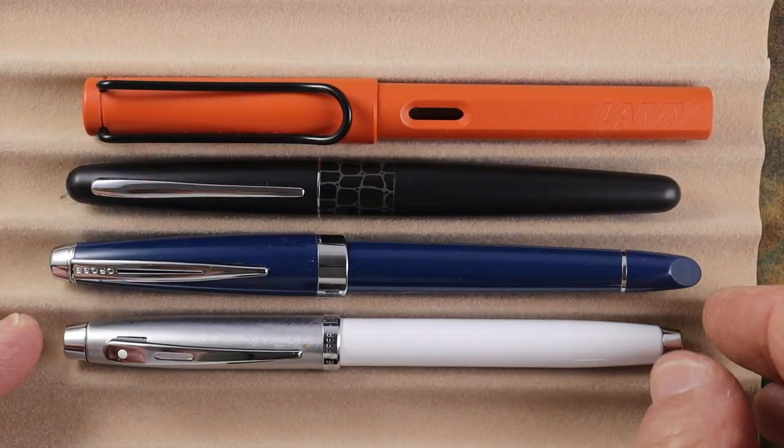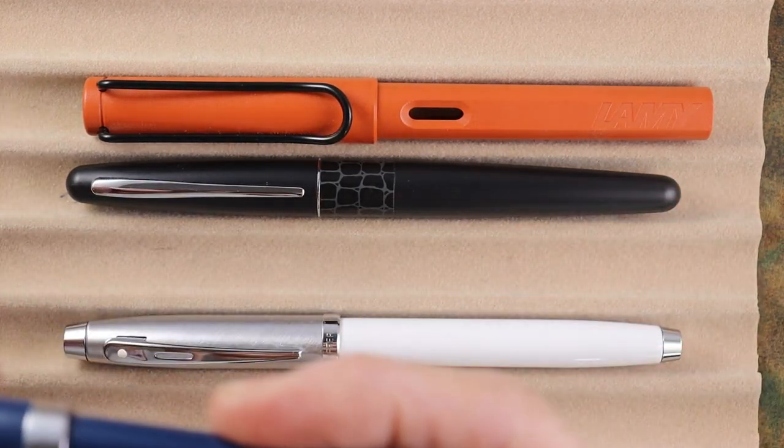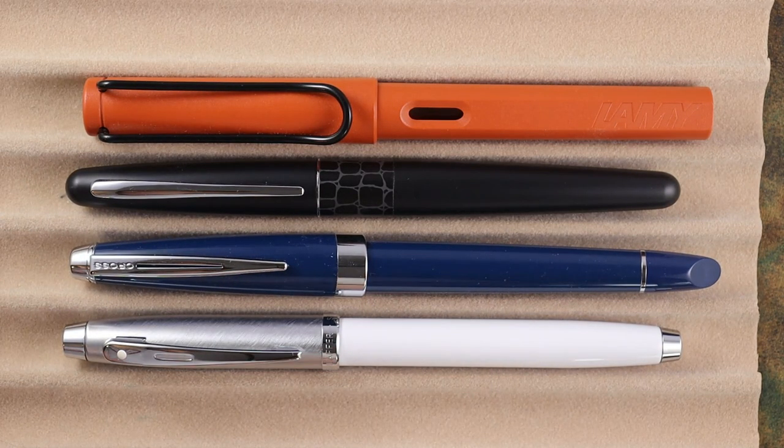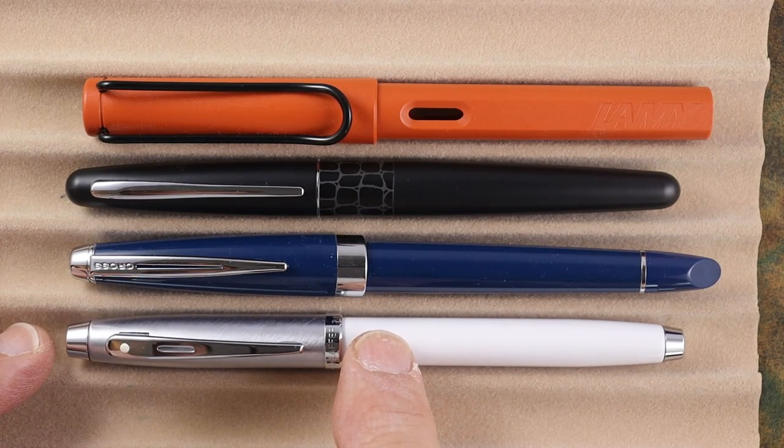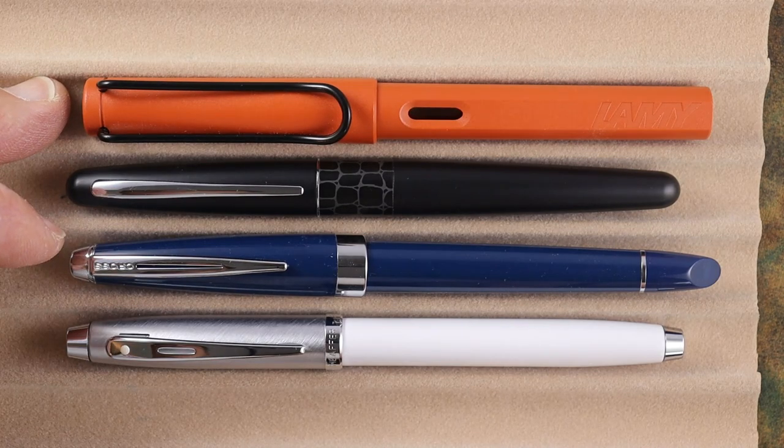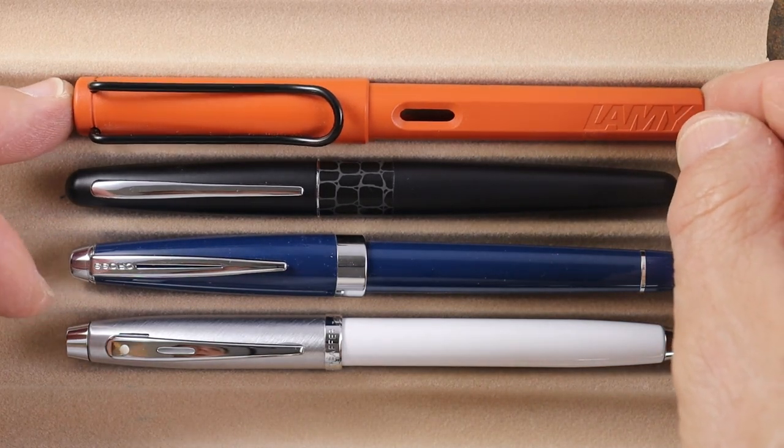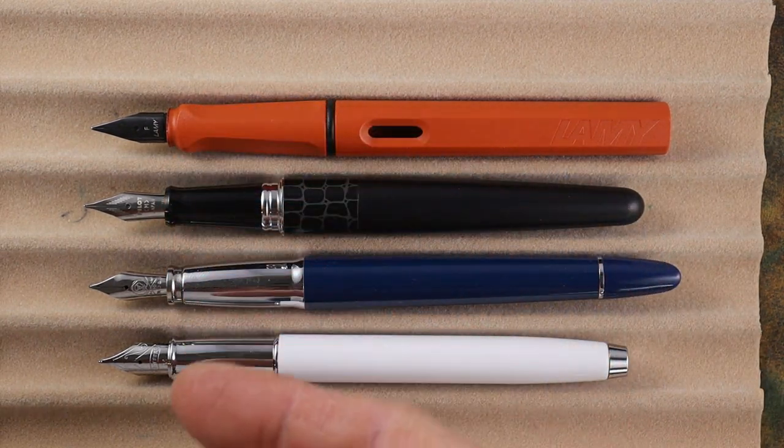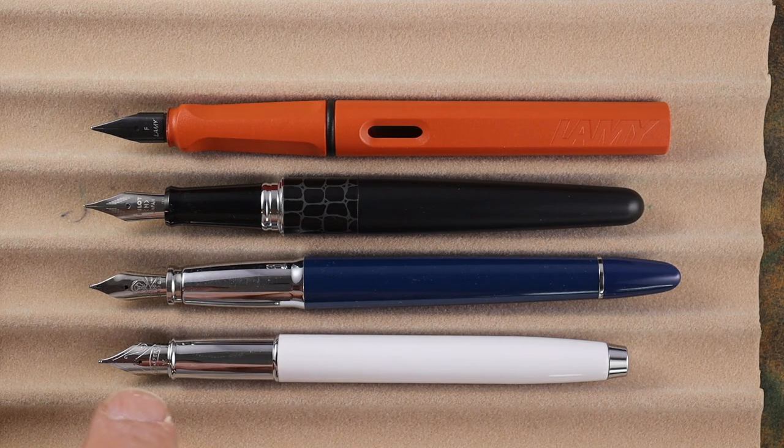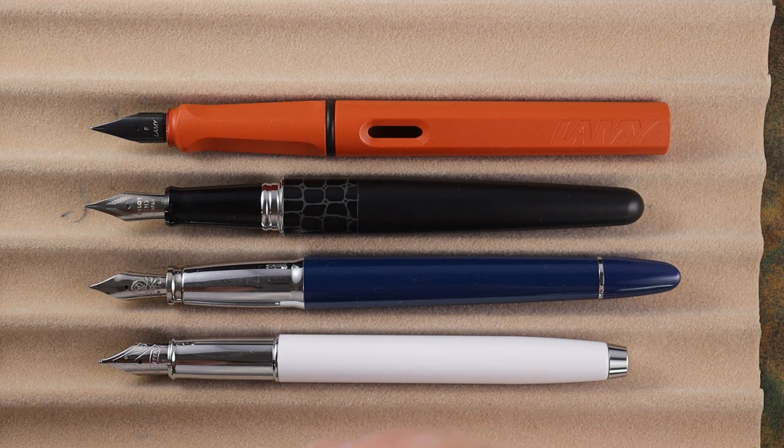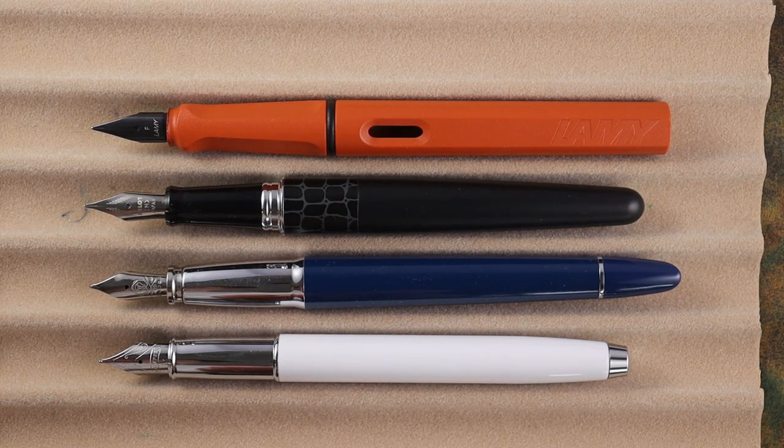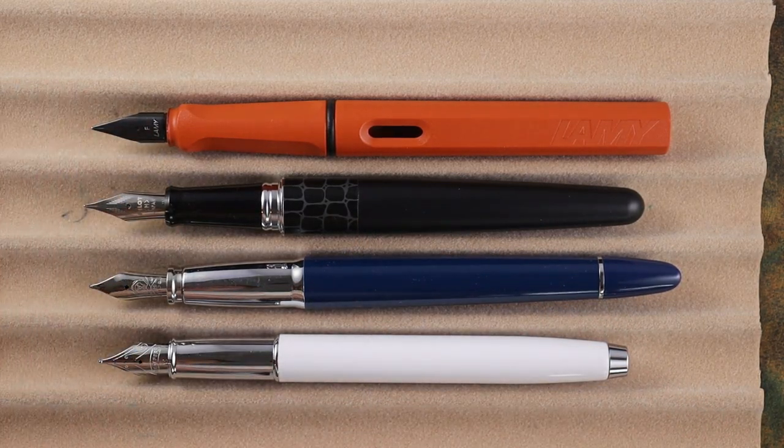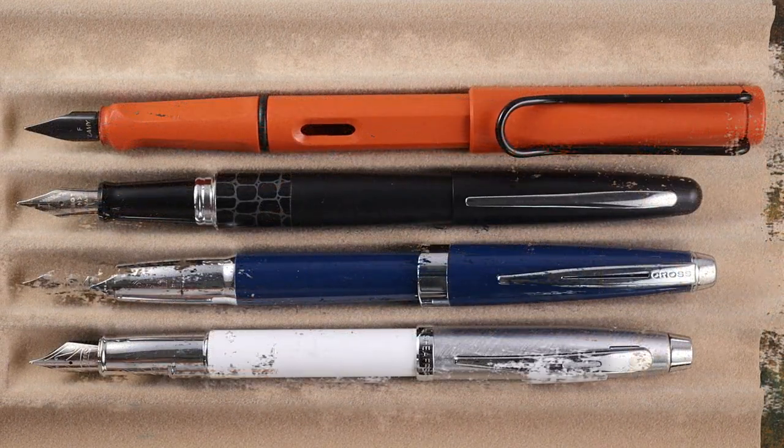Let's do some size comparisons. Here we have the Cross Adventure, and then we have the Sheaffer 100, the Pilot Metro, and the Lamy Safari. Here they are uncapped or unposted. They all have about the same size nibs on these. The Sheaffer is kind of interesting. It's width at the base is a number six but definitely the length isn't the same. And here they are posted.